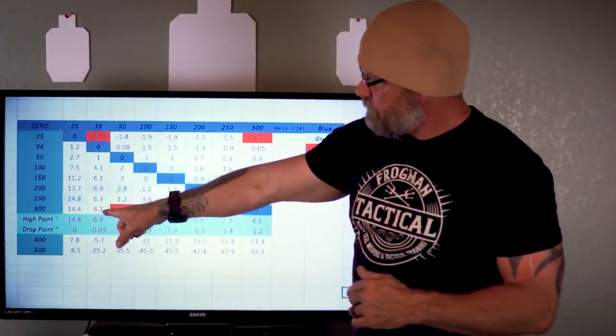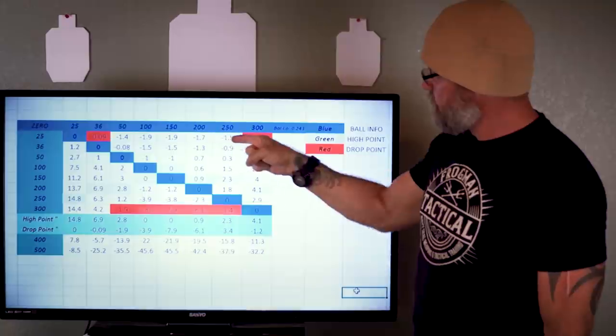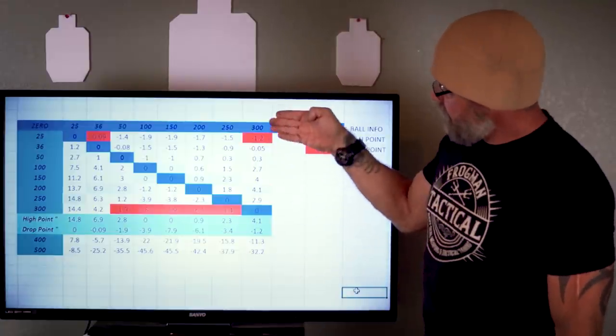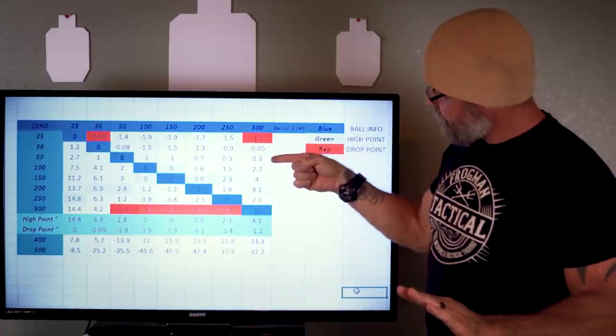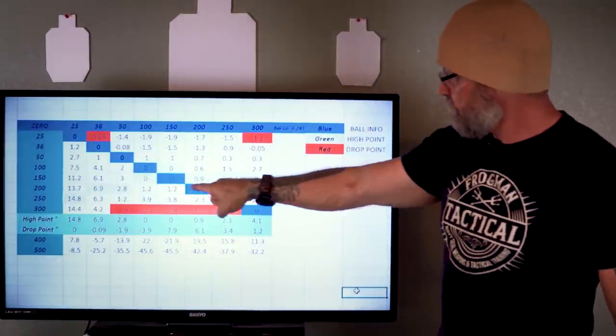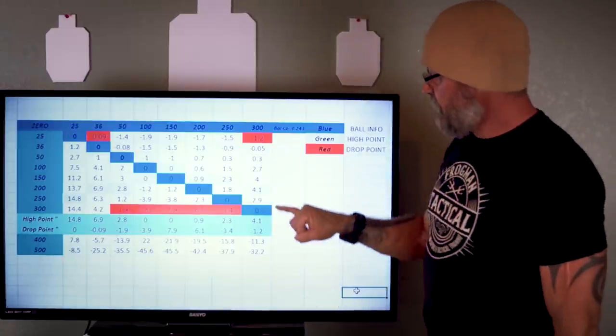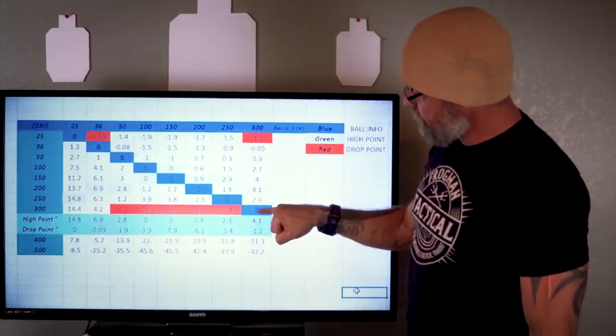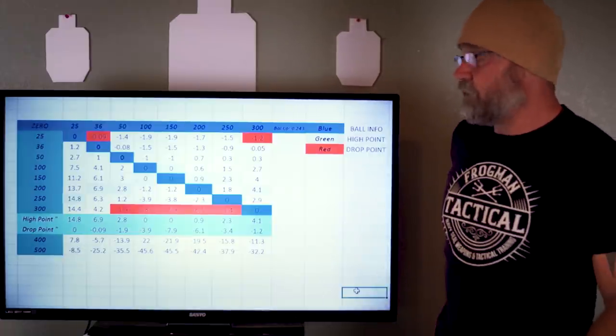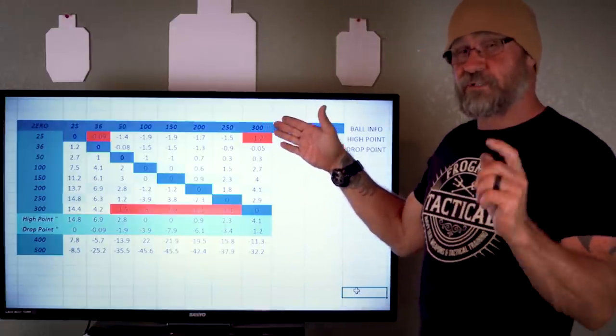300 yards zero. Once again at 25 yards the drop point is 1.2 inches lower, point of aim, point of impact. As we increase the distance again you're going to see an increase or rise in the bullet all the way once again out to 200 yards. High point's 4.1 inches, point of aim, point of impact 4.1 inches, and then it starts falling off to a 300 yard zero. So up to this point a 36 yard zero and a 300 yard zero is not that different. Only thing we can say is a 300 yard zero is just a couple inches flatter overall, roughly three to be exact for this particular round.